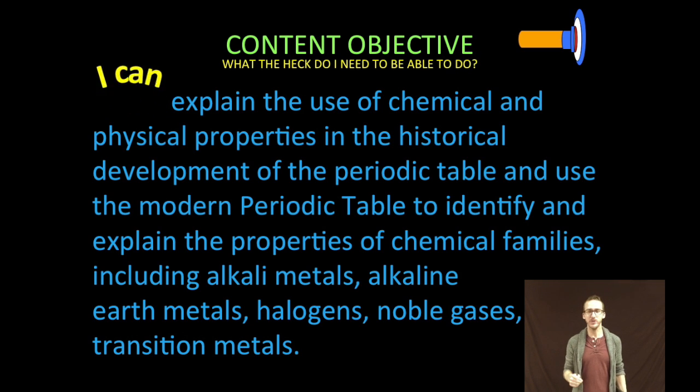We are going to explain the use of chemical and physical properties in the historical development of the periodic table and use the modern periodic table to identify and explain the properties of chemical families including the alkaline metals, alkaline earth metals, the halogens, the noble gases, and transition metals.